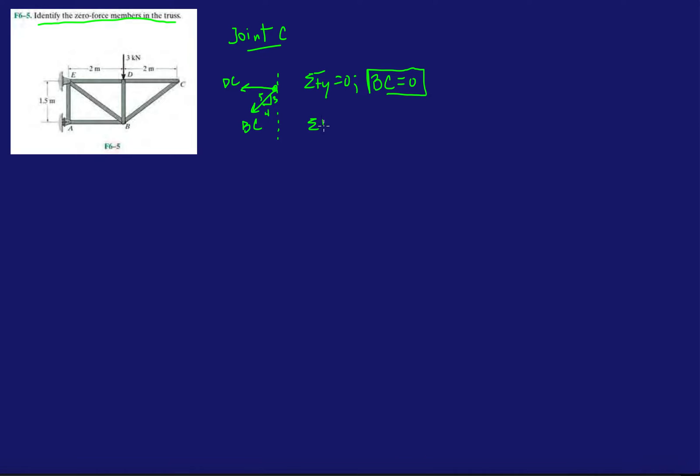And then that means that the only force in the x would be DC and that would also have to be equal to zero. Okay, so right away I can see, alright, I have two zero force members there, okay. So, I'm going to label them like this. Zero force member, zero force member. Let's put a dash through it. Looks better.